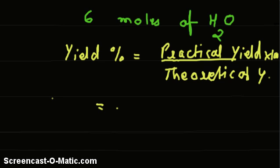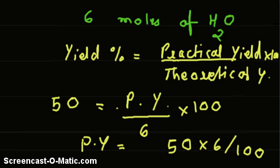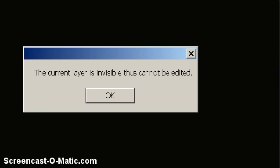Yield percentage is 50, which has been provided, and we have to find out practical yield. Theoretical yield is 6 moles. Therefore, practical yield equals 50 into 6 divided by 100. And we get the answer as three moles. Three moles of water are actually or practically produced.